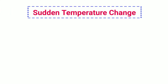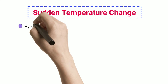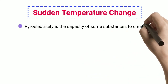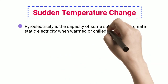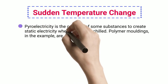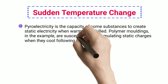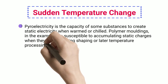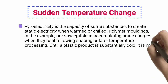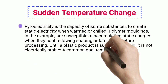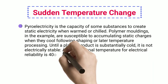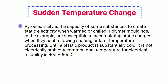Sudden Temperature Change: Pyroelectricity is the capacity of some substances to create static electricity when warmed or chilled. Polymer moldings, for example, are susceptible to accumulating static charges when they cool following shaping or later temperature processing. Until a plastic product is substantially cold, it is not electrically stable; a common goal temperature for electrical reliability is 40–50°C.